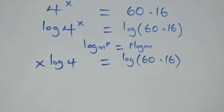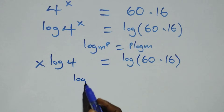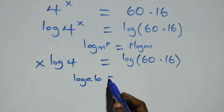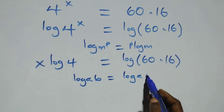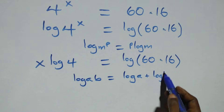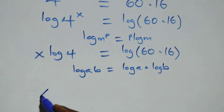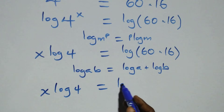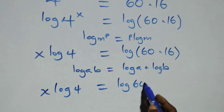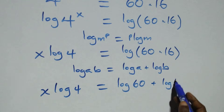Also here, we apply the product rule of logarithms: log(a×b) is the same as log a plus log b. So we have x log 4 equals log 60 plus log 16.